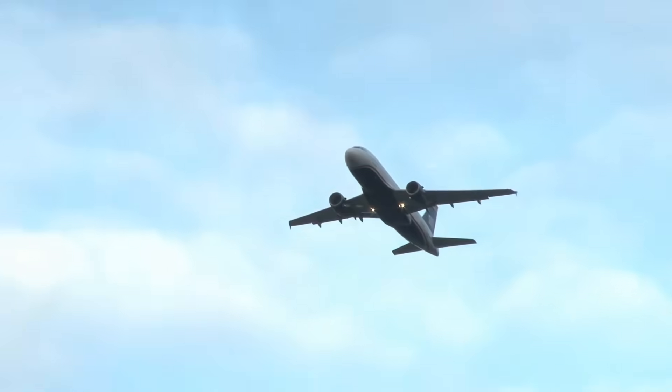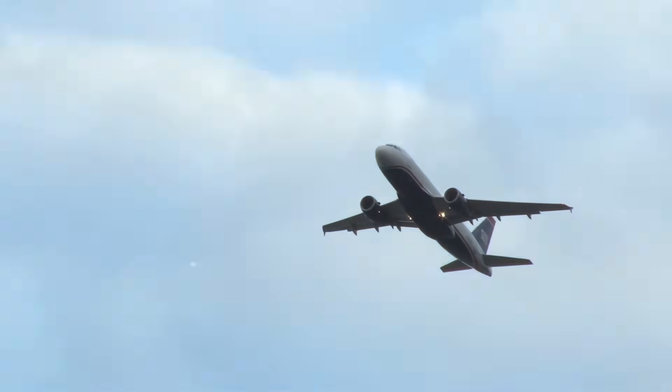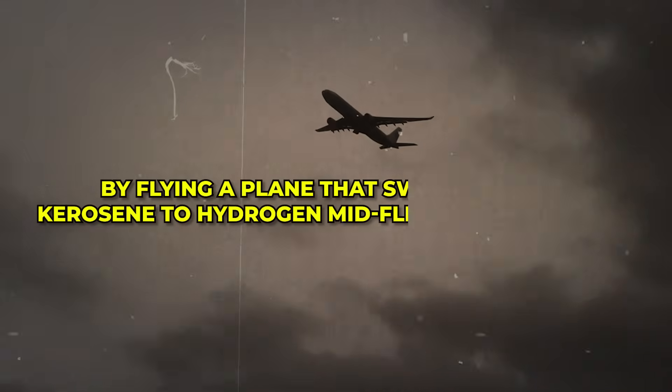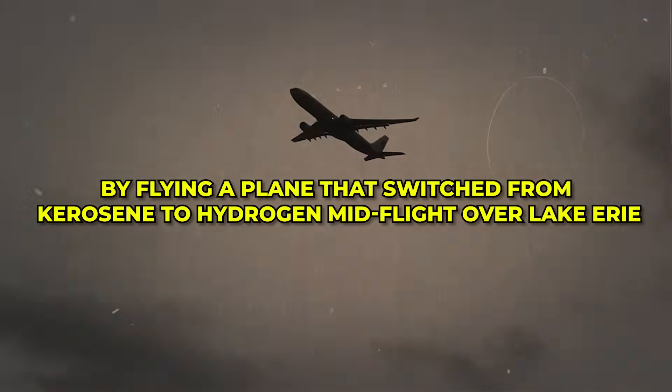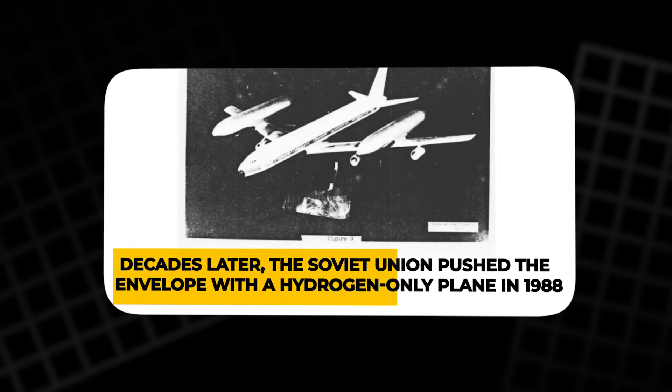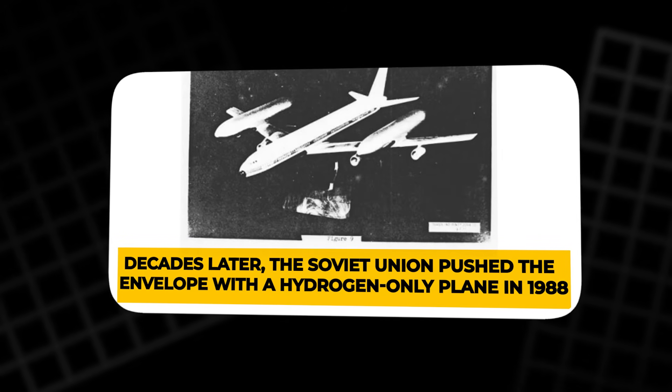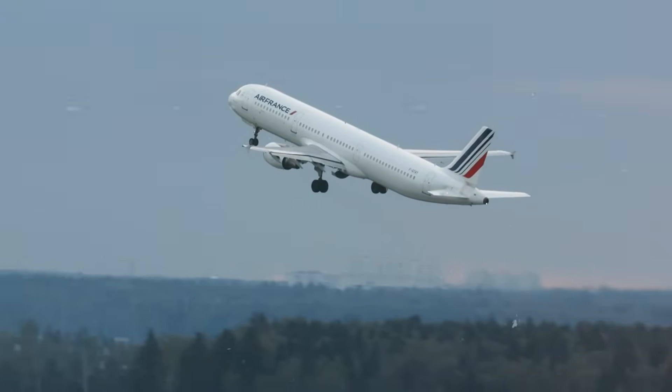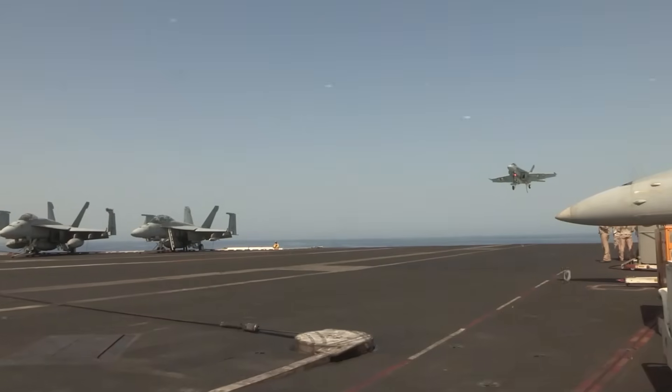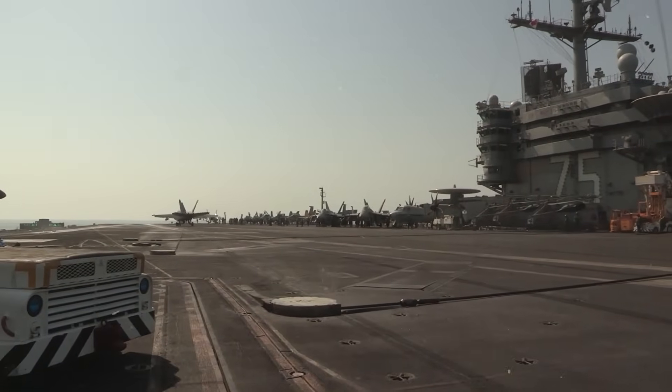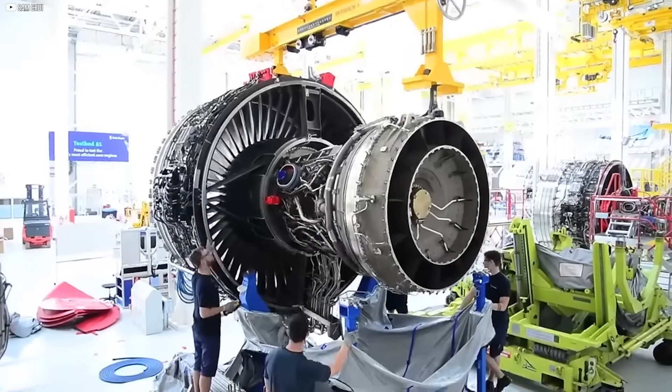Yet hydrogen-powered flight is not a brand new idea. In 1957, NASA demonstrated the potential by flying a plane that switched from kerosene to hydrogen mid-flight over Lake Erie. Decades later, the Soviet Union pushed the envelope with a hydrogen-only plane in 1988, showcasing the allure of flying higher and cleaner. However, those pioneering aircraft faced technological limits and geopolitical challenges that stalled their progress.